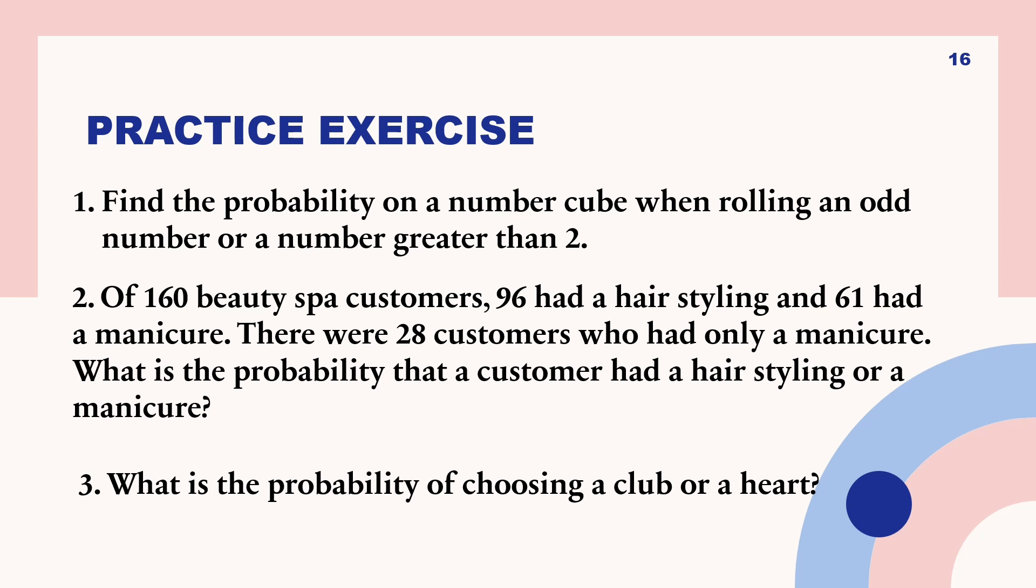Now, let us find out the answers or the solutions to the following questions. For number 1, the probability of rolling an odd number or a number greater than 2 is equal to 5 over 6. While for number 2, the probability of a customer that had a hair styling or a manicure is 31 over 40. And for number 3, the probability of choosing a club or a heart is equal to 1 half.